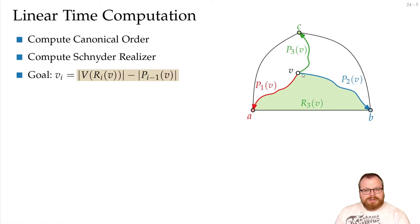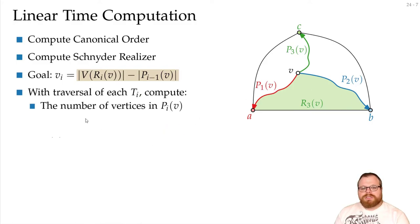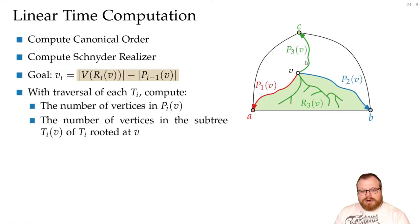Let's look at the green tree. If we traverse the tree in some order, then we can easily find out what is the length of the path from v to the root, because that's just the depth of the vertex. But we can also easily find the number of vertices here. We want to compute the number of vertices here, but also we want to find out how many vertices lie in the subtree that's rooted in v.